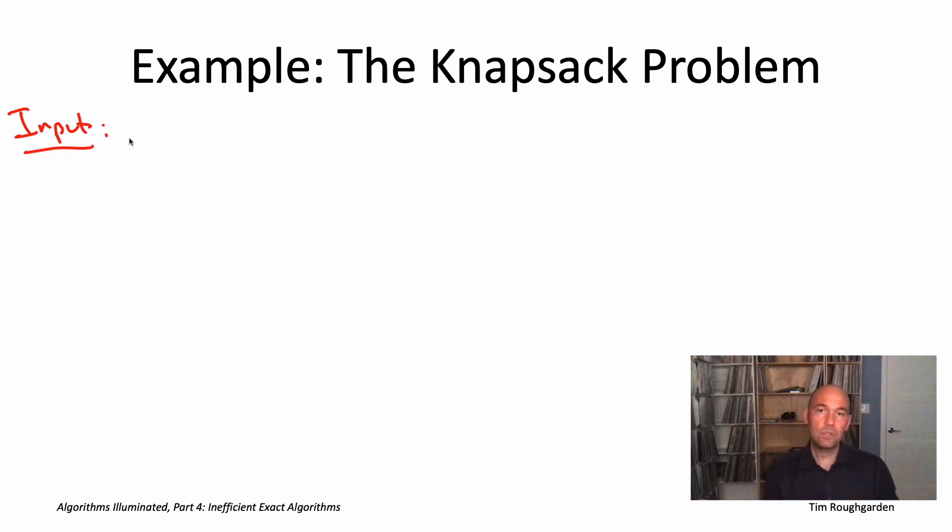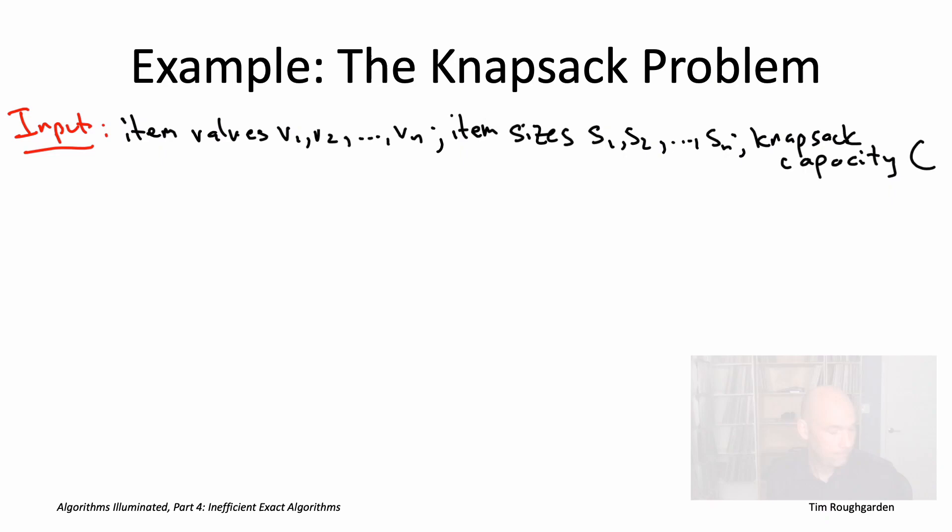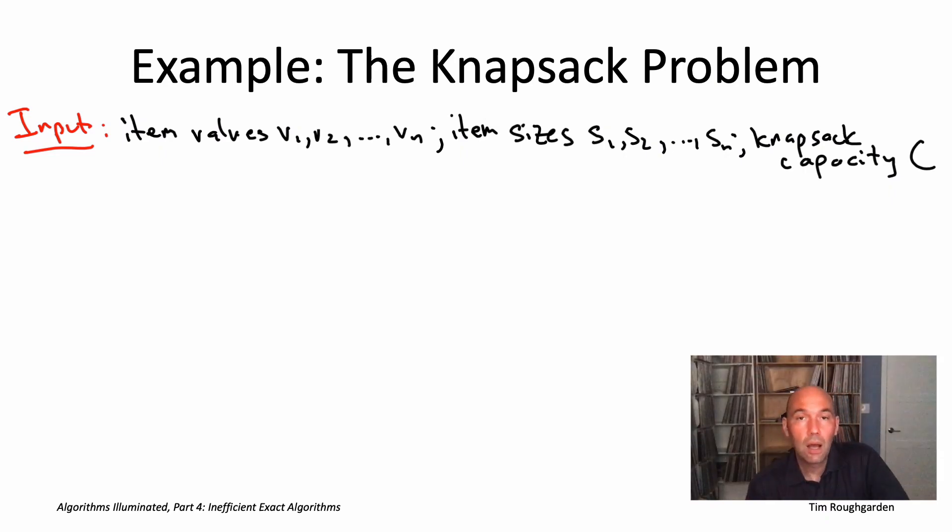There are n items, each of which has a value and a size, and then the last of the numbers, capital C, is a knapsack capacity. For example, here's an example with 5 items and a knapsack capacity of 10.